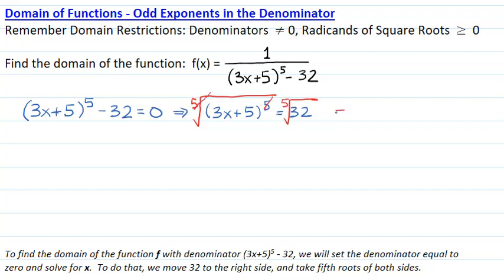We will get the equation 3x + 5 equals the fifth root of 32, which is 2. And we will solve this for x. 3x equals negative 3, or x equals negative 1.